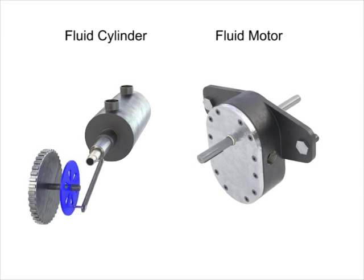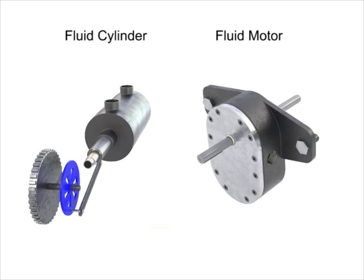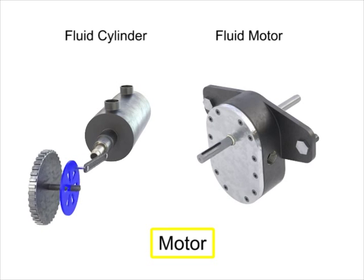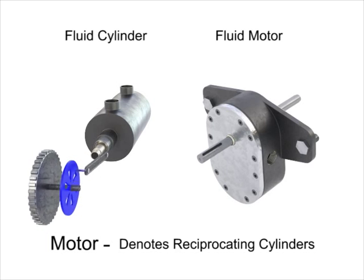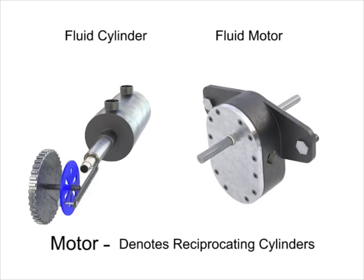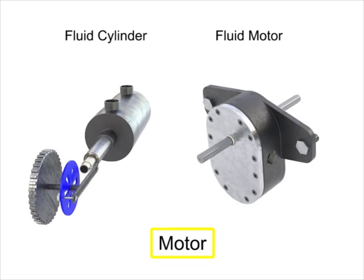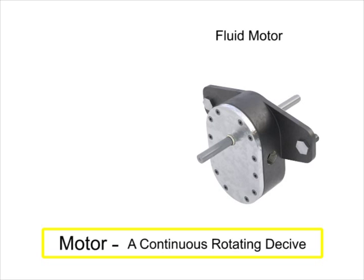The term fluid motor is normally used to identify those devices which deliver continuous rotary power output when supplied with fluid under pressure. The term motor is sometimes used by manufacturers to denote reciprocating cylinders. Technically, this is a correct usage but can lead to a misunderstanding of the type of actuator to be used. For the remainder of this video, we'll use the term motor to describe a continuous rotating device.